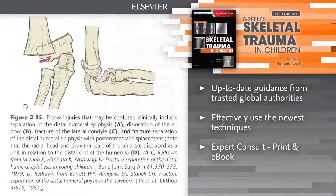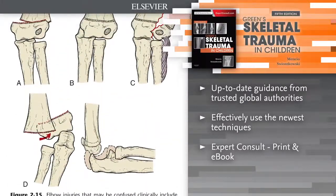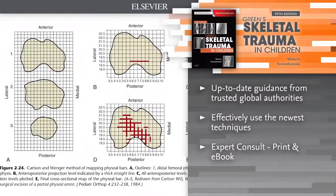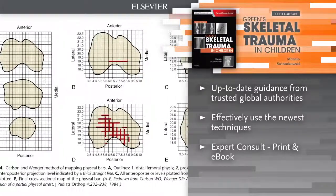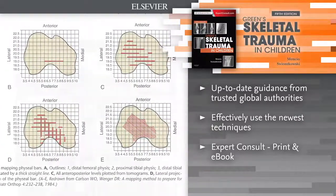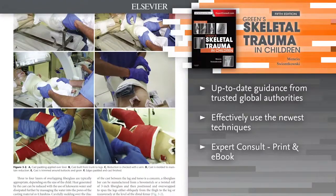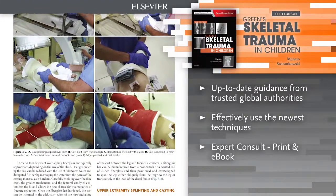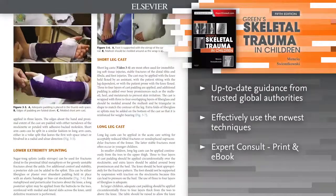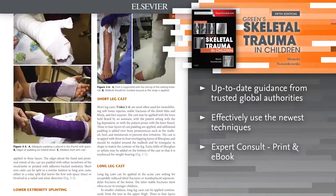State-of-the-art coverage includes crucial chapters on skeletal trauma related to child abuse, anesthesia and analgesia, management of children's fractures, and outcome measures and rehabilitation. Make the best use of the newest techniques by effectively applying problem-focused clinical judgment and state-of-the-art treatment options.